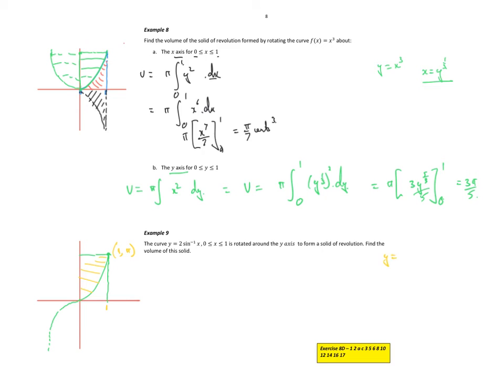If y equals 2 sine inverse of x, sine inverse of x equals y on 2, x equals sine y on 2. So I get integral pi, y values 0 to pi of x squared, which is sine squared y on 2 dy.